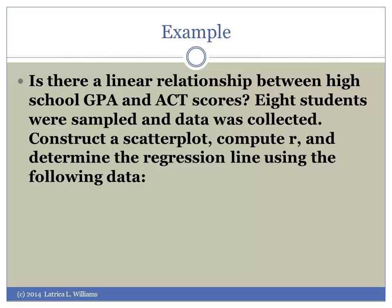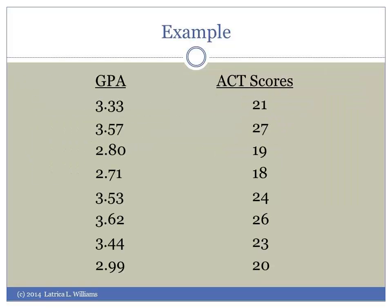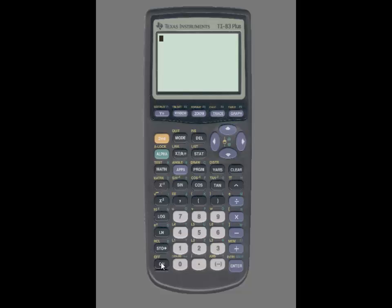To use the calculator, you'll first need to enter the data for the independent variable into a list and the data for the dependent variable into a list. In order to do that, we're going to press stat and select number one for edit. I'm going to enter the data for the independent variable into L1 and the data for the dependent variable into L2.